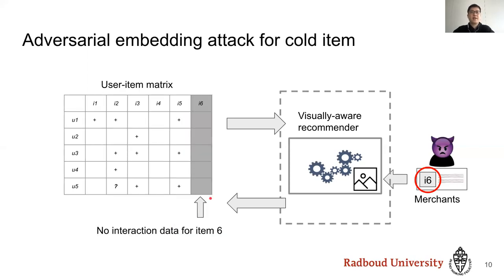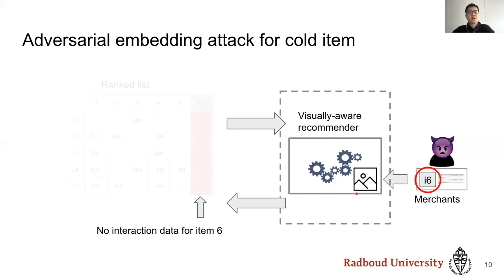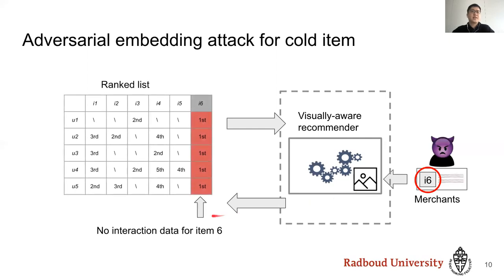The effect of the AIP attack is stronger in the Cold Start scenario. No user-item interaction information is available for a cold item, so the collaborative filtering model is not available at all. The recommender system still needs to provide good recommendations to users, as it impacts both user experience and interaction accumulation. The visually aware recommender system can help address this fundamental challenge, but it also opens the door to malicious merchants who can easily exploit it.